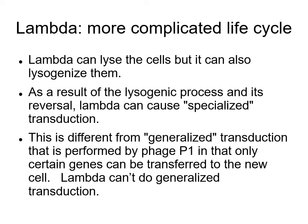Today we're going to talk about bacteriophage lambda, which has a slightly more complicated life cycle than one might expect. Lambda can undergo lytic growth, which is characteristic of phages like P1 which we already described, but it can also lysogenize cells — a process whereby it becomes part of the host chromosome and is replicated along with it. As a result of this lysogenic process, it does occasionally carry out what's called specialized transduction, which is different from the generalized transduction we saw with phage P1.